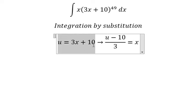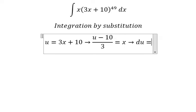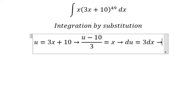Next we do the derivative for both sides. So we will have du equals to 3 dx. Because we don't have the 3 in here, we need to divide both sides by 3.